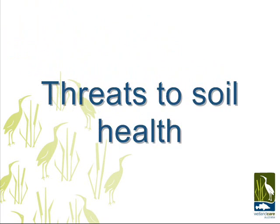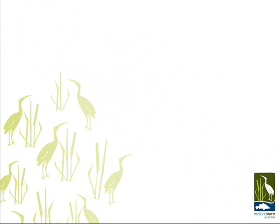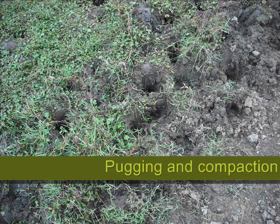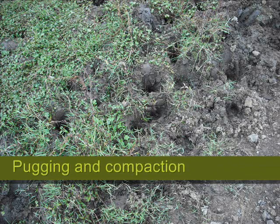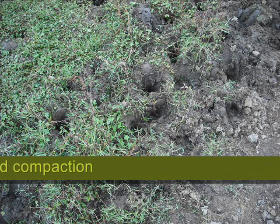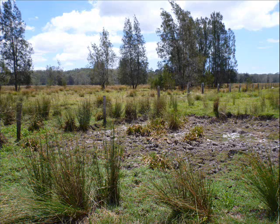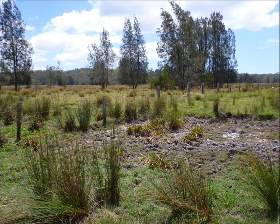Threats to soil health. Compaction and pugging occur when moist or wet soils are unable to support the weight of grazing stock and their hooves cause damage. This results in the soil being unable to drain and poor pastures.